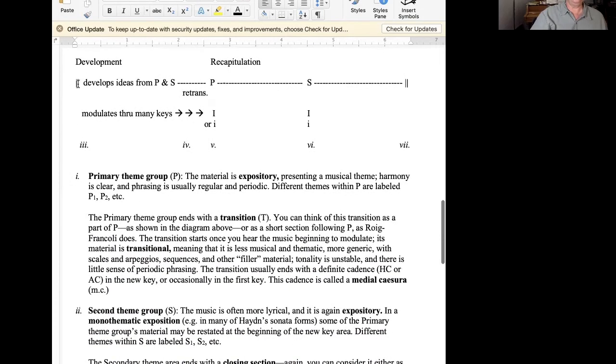The second part of the sonata form has a lengthy section that's called a development, and then it has a recapitulation, which is at least as long as the exposition was. The development develops ideas from P and S, and it may introduce new thematic material. It might be helpful for you to go back in your book and review chapter 12 for a discussion of different developmental techniques, such as fragmentation, variation, intervallic variation, truncation, expansion, and so on. Often the development section will intensify the material by incorporating extreme changes of dynamic or of register or by employing polyphony, that is counterpoint.